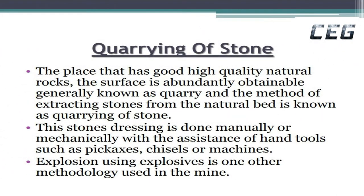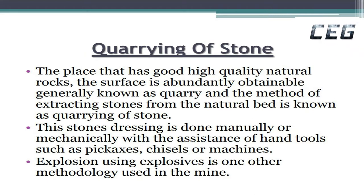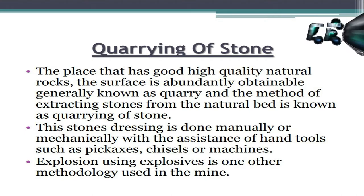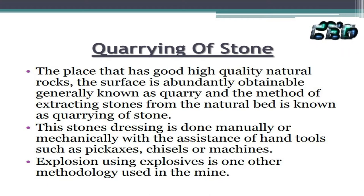Quarrying of stone: The place that has good high quality natural rocks, where the surface is abundantly obtainable, is generally known as a quarry. The method of extracting stones from the natural bed is known as quarrying of stone. Stone dressing is done manually or mechanically with the assistance of hand tools such as pickaxes, chisels, or machines. Explosives are one other method used in the quarry.